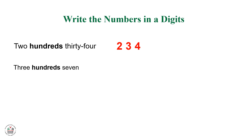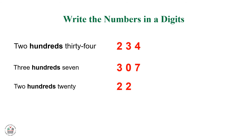3 hundreds, 7. Here we have 3 hundreds, and 0 tens, and 7 ones. So we write 3, 0, 7 — that is 307. Next, 2 hundreds, 20. Here we have 2 hundreds, and the number of tens is 2, while the number of ones is 0. So we write 2, 2, 0 — that is 220.